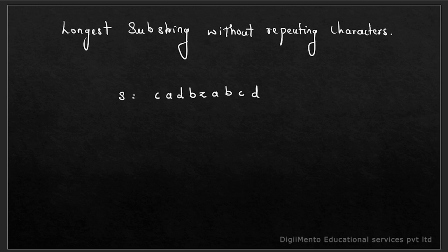What is a substring? Substring means a contiguous string — we can also say consecutive letters or consecutive words. So here we can say that A, C, D is consecutive and the length of this is 3. Here the characters are not repeating: C is unique, A is unique, D is unique — all are unique.